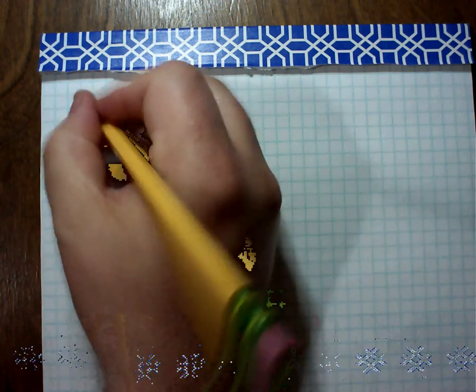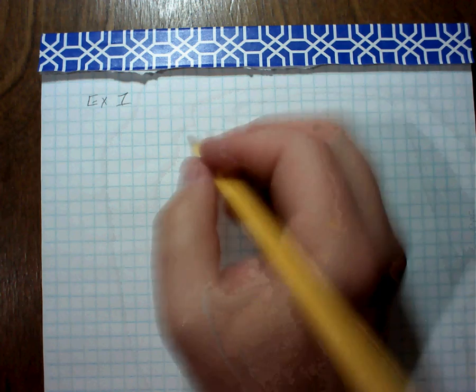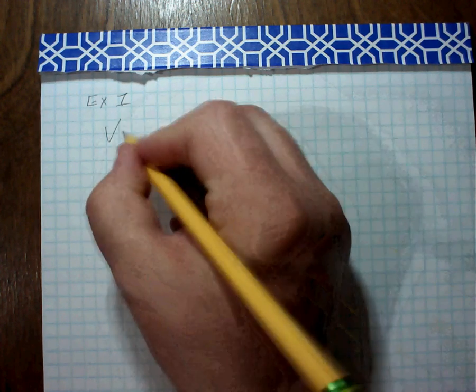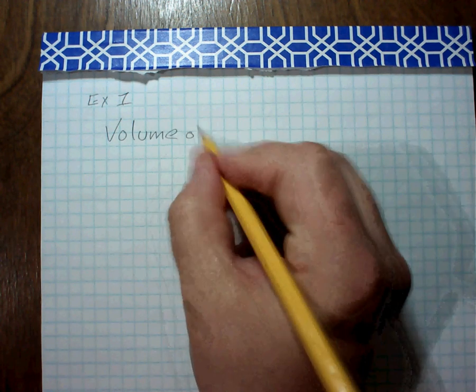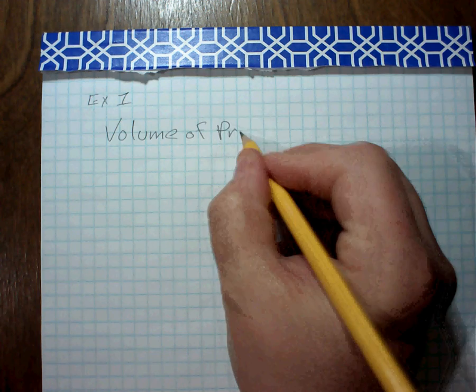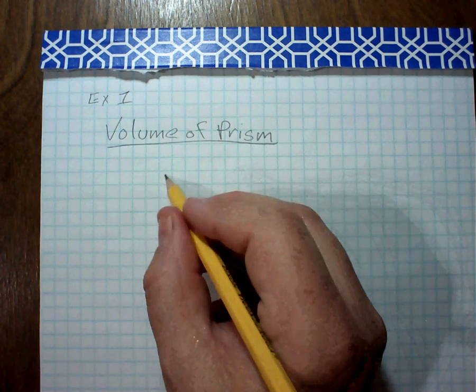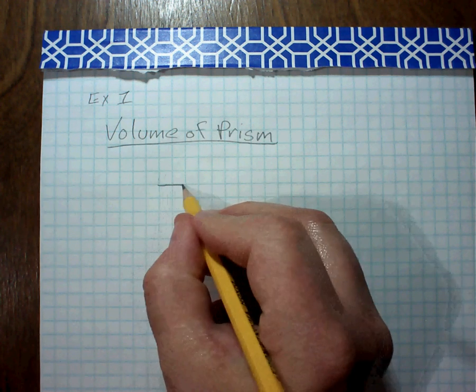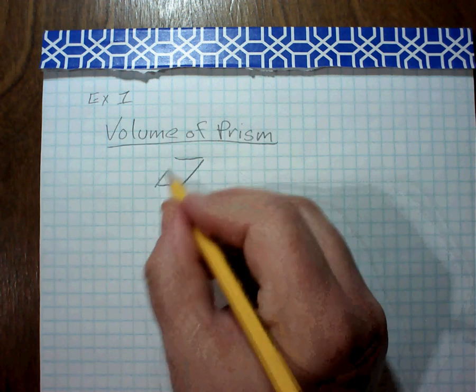So, for example number one, we should probably know that when we're taking the volume of a prism, remember that in our last lesson, we said that a prism had a polygon as a base.